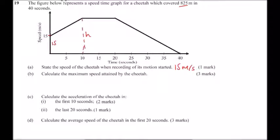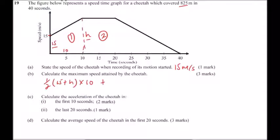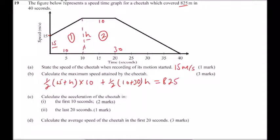The graph is divided into two trapeziums — trapezium one and trapezium two. The area of the first trapezium is one-half times (15 + h) times 10. Then we add the area of the second trapezium, which is one-half times (10 + 30) times h. This gives the total distance covered by the cheetah, which equals 825.